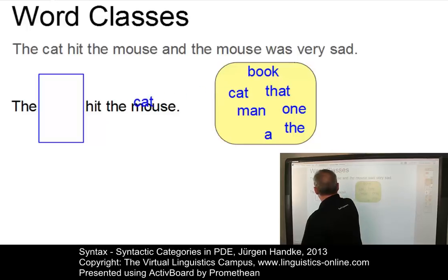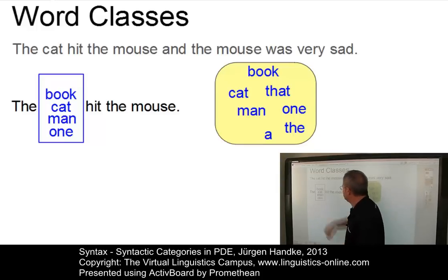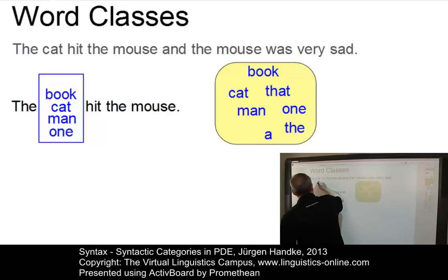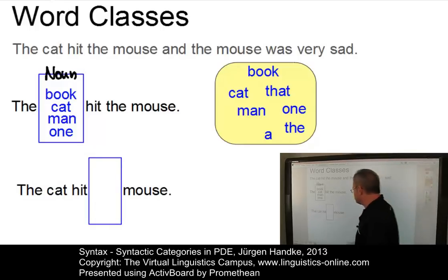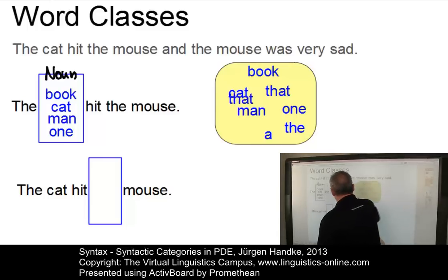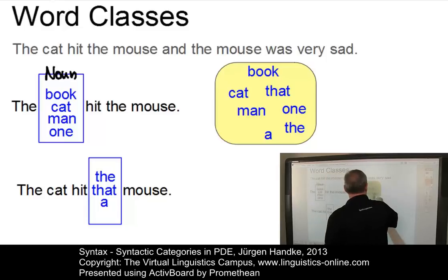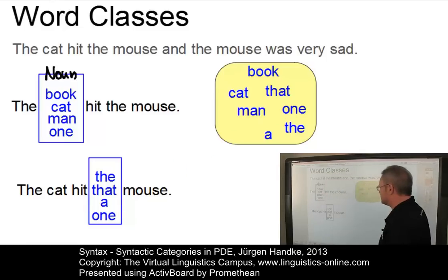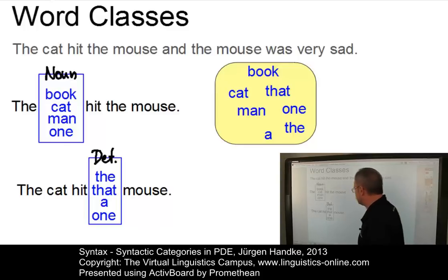Now we can associate words with this context that can all be inserted into this position. We can insert the cat, man, or book — for example, The book hit the mouse. And even under some conditions, The one hit the mouse. This context defines nouns. For another context — The cat hit... — we could introduce that mouse, the mouse, a mouse, or even one mouse. This shows that one can be associated with two word classes: with nouns in the first case, and with the determiner position (DET) in the second.